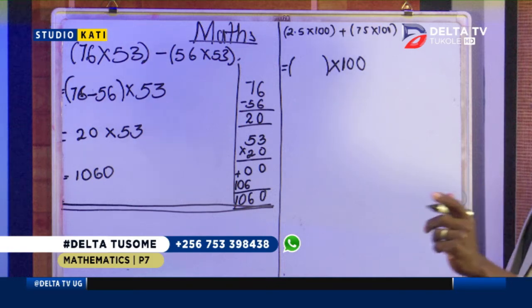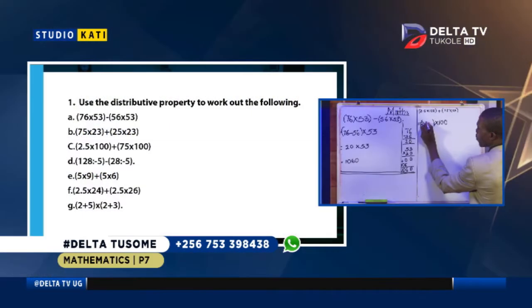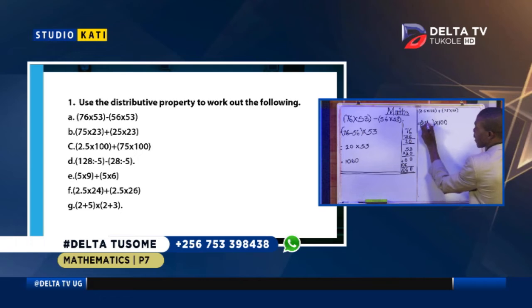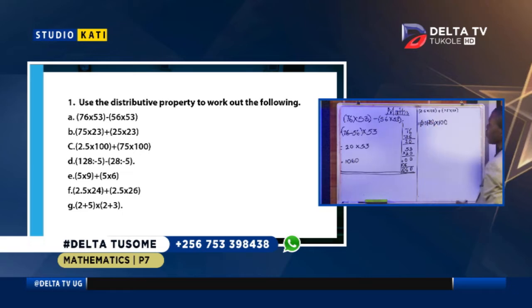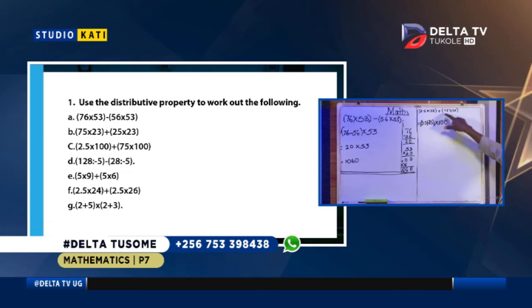In the bracket I will put the remaining values, which is 2.5. Then what is remaining here — joining the two brackets it is an addition — so plus 75, because in this bracket we took away the 100. So we say plus the 75 that we remain with. And so let's continue.